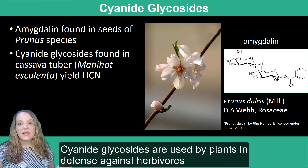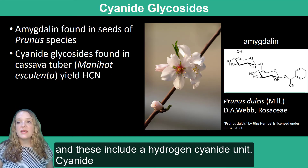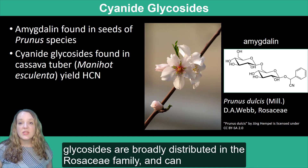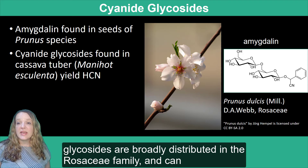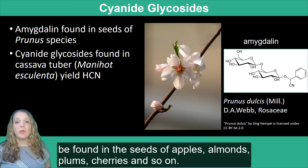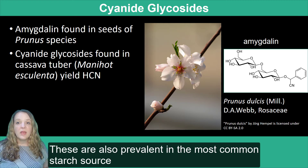Cyanogenic glycosides are used by plants in defense against herbivores, and these include a hydrogen cyanide unit. Cyanogenic glycosides are broadly distributed in the Rosaceae family and can be found in the seeds of apples, almonds, plums, cherries, and so on.